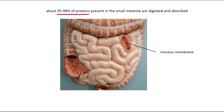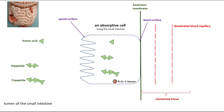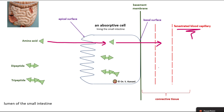In this image, I am pointing out the mucous membrane of the small intestine. Here we have the absorptive cells. Looking at a closer view of one absorptive cell, we notice that amino acid molecules must pass through the apical surface to get inside the absorptive cell, and then they must pass through the basal surface to get into the fenestrated blood capillaries in the connective tissue in the villi of the small intestine.